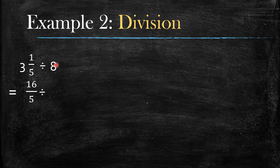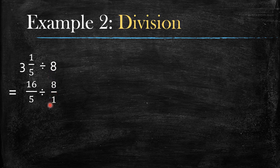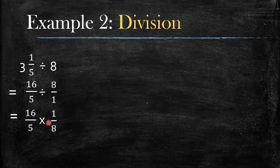Now for the second part, make the whole number a fraction. When you have a whole number, it is always over 1 — no matter what the number is, even if it's 2, 3, 4, 500, 600, whatever it is, you always put it over 1 to make it a fraction. Now that you have fractions on both sides, change the division sign to the multiplication sign, and flip the second fraction.